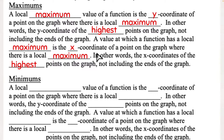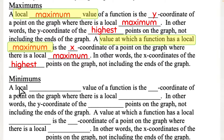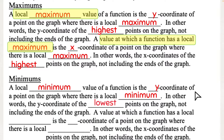Make sure you're paying attention. Is this a local maximum value of a function, or a value at which a function has a local maximum? There's different wording there. Minimums work the same way: a local minimum value of a function is the y-coordinate of the lowest point on the graph, not including the end behavior. A value at which a function has a local minimum is the x-coordinate of the lowest point on the graph, not including the end behavior.